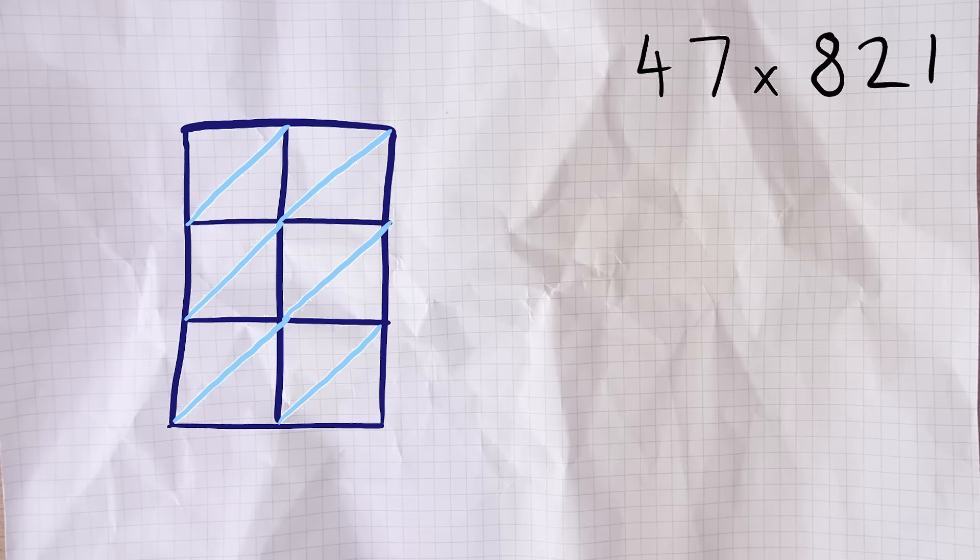The next step is to draw diagonal lines going from the top right to the bottom left across each square. Then write one number across the top and one down the right hand side. It doesn't matter which goes on top, you'll end up with the same answer either way. By now you've actually done a lot of the hard work. That's the first stage completed.